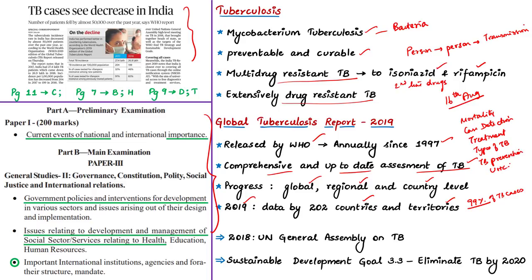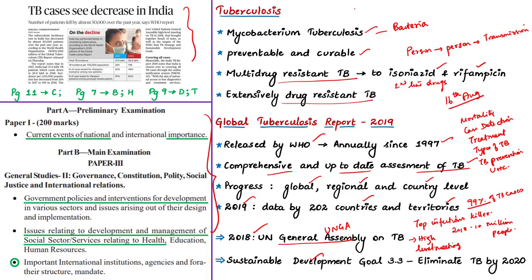Countries are making progress in providing quality TB care and reducing TB-related deaths, but TB remains the top infectious killer worldwide — about 10 million people fell ill from TB in 2018. In 2018, the UN General Assembly held its first-ever high-level meeting on tuberculosis to accelerate efforts in ending TB. The improvements align with SDG 3 (Good Health and Well-being), specifically target 3.3, which aims to eliminate tuberculosis by 2030.